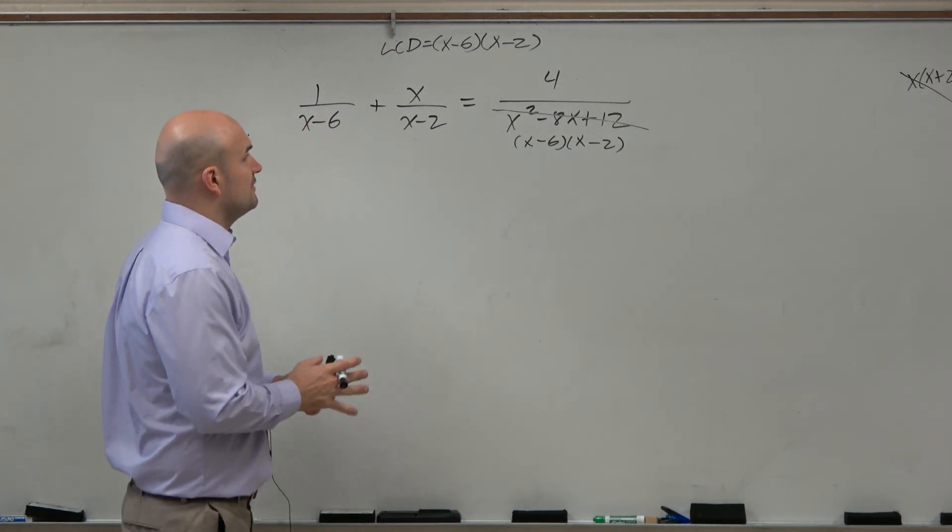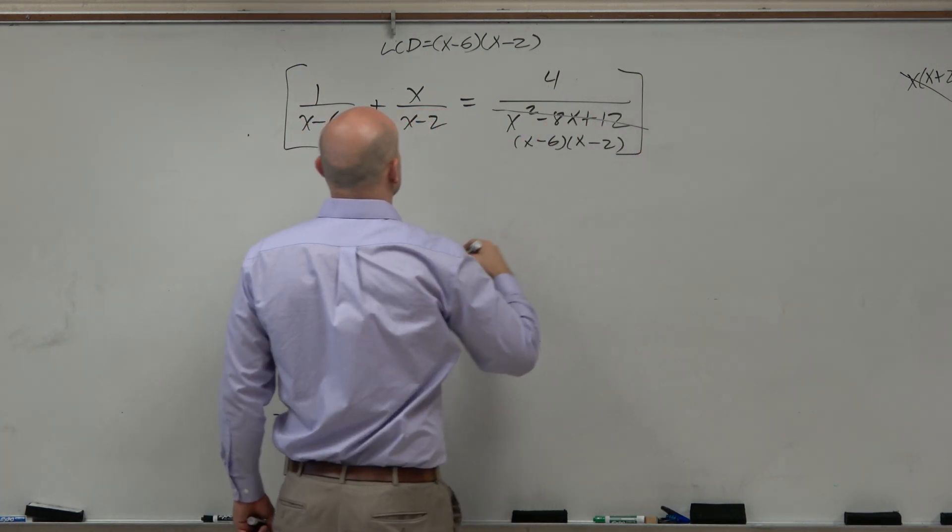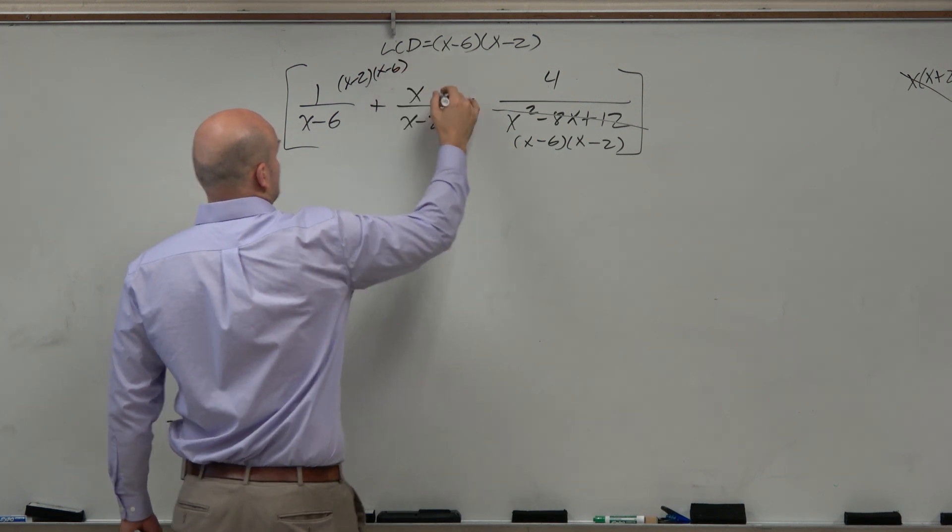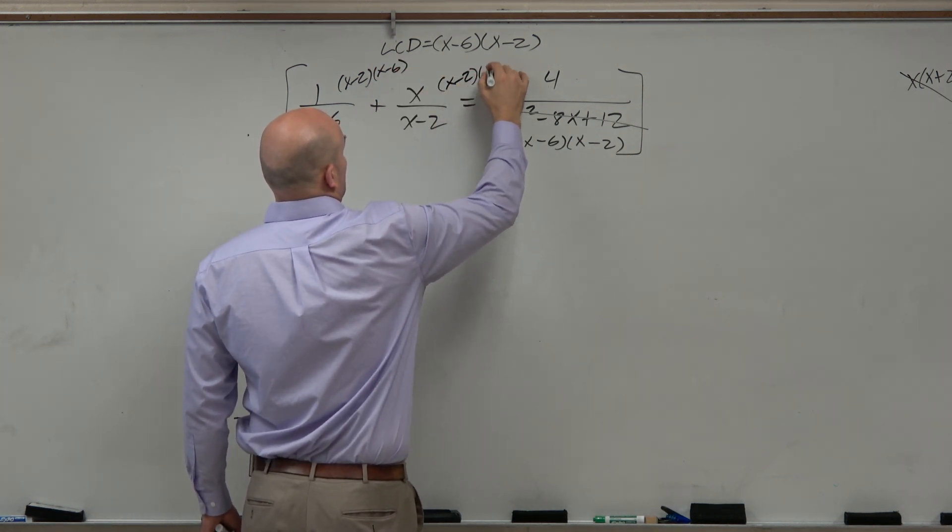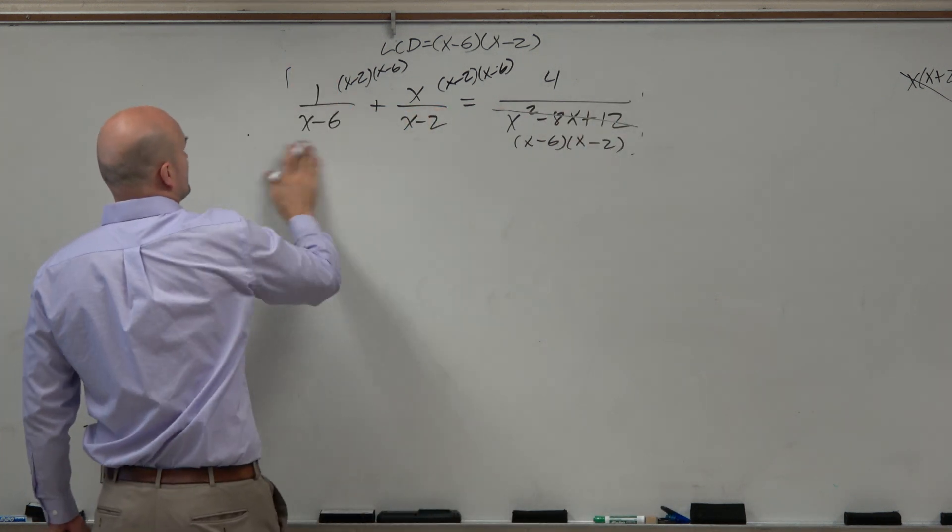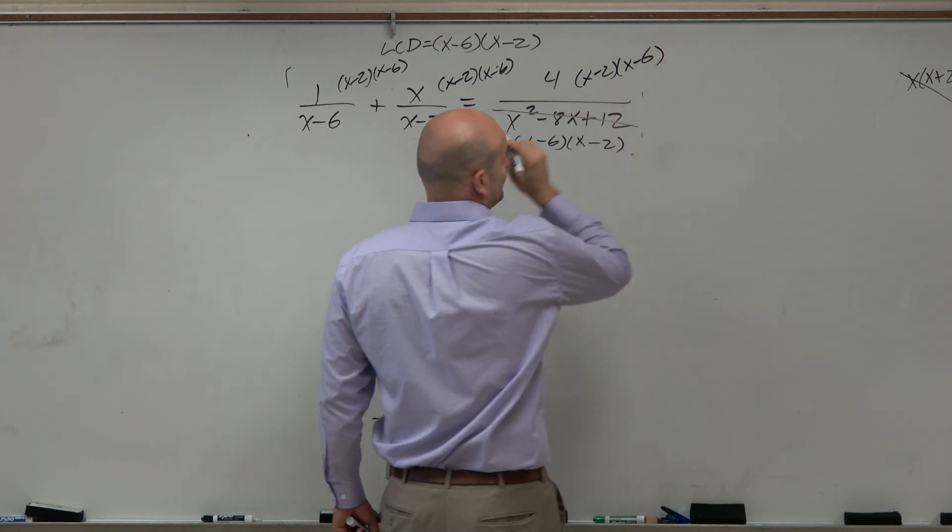OK, so therefore I'm just going to multiply everything times x minus 2. Actually, let's write it out: x minus 2 times x minus 6. I was going to do brackets, but you know what, let's just say that.